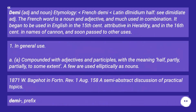Demi — adjective and noun. Etymology: French demi, Latin de medium half. The French word is a noun, an adjective, and much used in combination. It began to be used in English in the 15th century attributively in heraldry, and in the 16th century in names of cannon, and soon passed to other uses in general use.